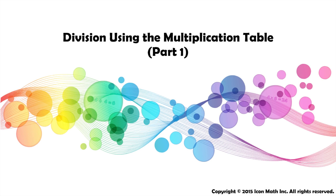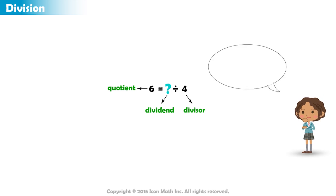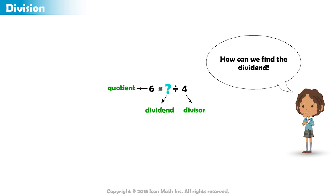Division using the multiplication table. Take a look at the following division sentence. Here we have a division sentence and our unknown is the dividend. How can we find our unknown? We want to find the number that when divided by 4, we get 6.